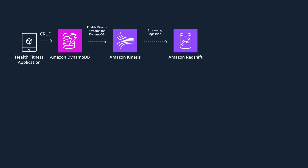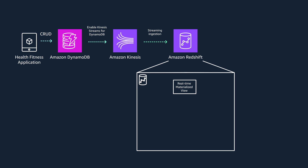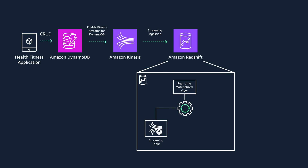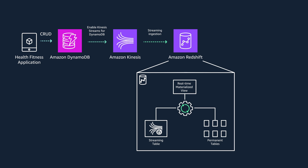Let's see how streaming ingestion works. Redshift works by acting as a Kinesis stream consumer. You create a materialized view that is the landing area for data. Auto refresh can be turned on, which loads data from the stream as it arrives. When the materialized view is refreshed, Redshift compute nodes allocate each data shard to a compute slice. Each slice consumes data from the allocated shards until the materialized view attains parity with the stream. You don't have to land stream data in Amazon S3 because streaming ingestion data goes directly to the Redshift materialized view.